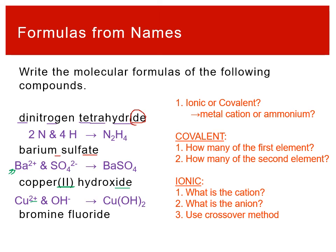Finally, bromine fluoride. When looking at this one, there are no tricks — no prefix, no ATE, no Roman numeral. We go through the brute force: bromine is not a metal, so it's not a cation. Bromine's a non-metal, fluorine's a non-metal, so this has to be covalent. No prefixes means there's one of each — one bromine, one fluorine. The formula is just BrF. We didn't use mono because bromine would never have a mono, and fluorine isn't oxygen, so it doesn't need mono either.